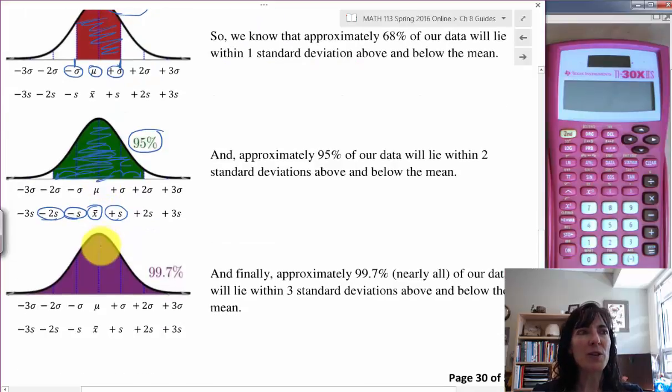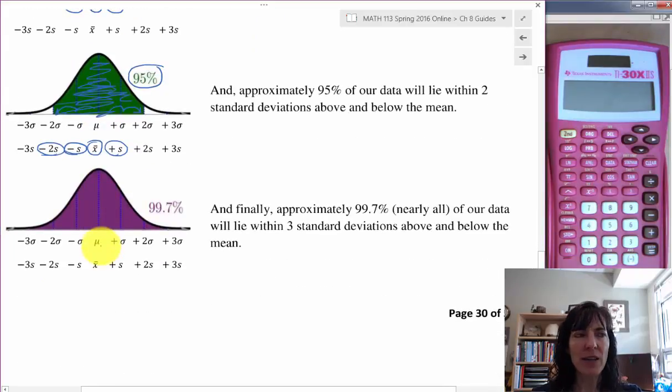Finally, the purple area is almost all of our data, and it's coming way out here to three standard deviations, lower and higher, than whatever our mean is. We add on some standard deviations, and we know that 99.7% of our data is going to be in that purple region. We can say 99.7% or nearly all of our data will be within three standard deviations above and below the mean.